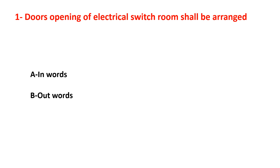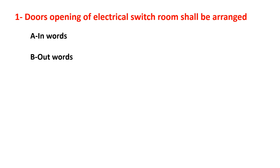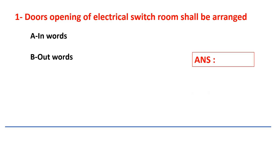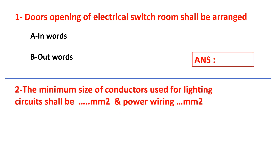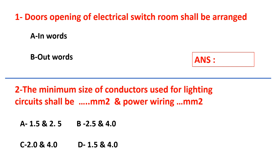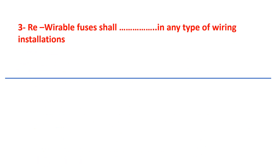Question number two: the minimum size of conductors used for lighting circuit shall be dash mm square and power wiring dash mm square. Your answers are: A) 1.5 and 2.5, B) 2.5 and 4, C) 2.0 and 4, D) 1.5 and 4. Select your answer.